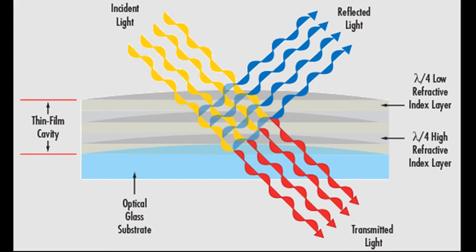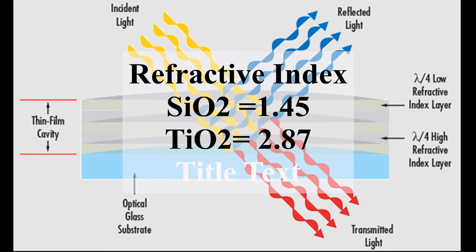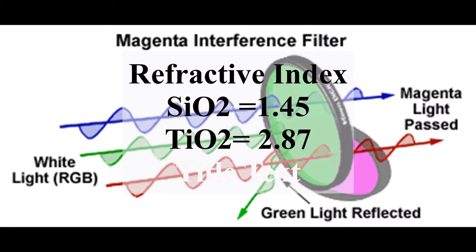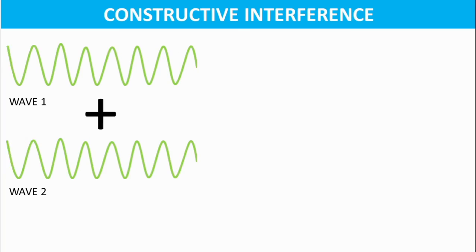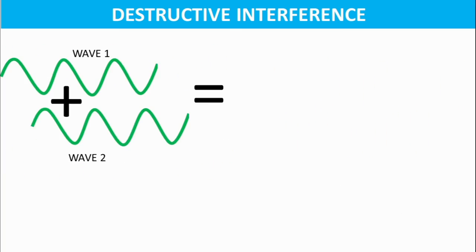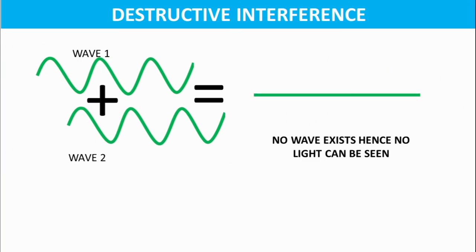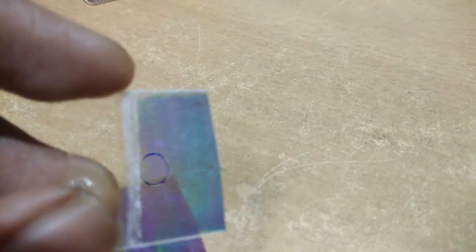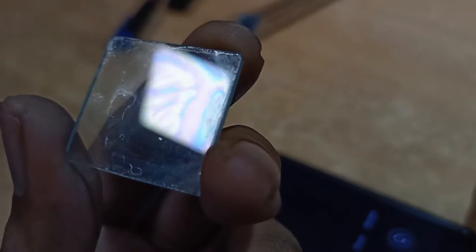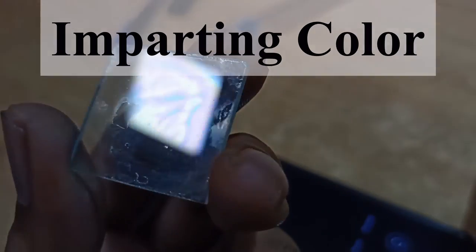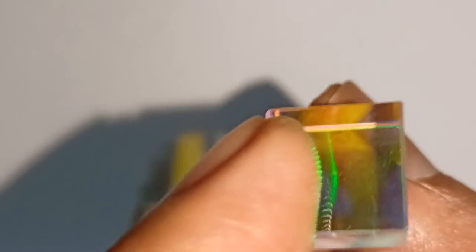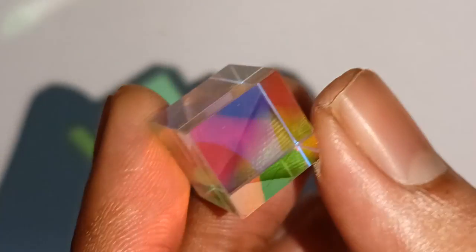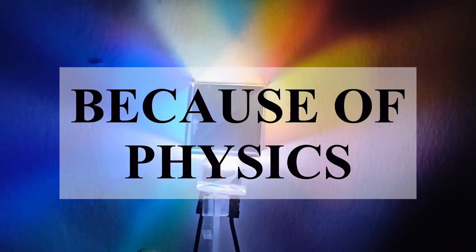Having alternating layers with different refractive indices causes the phenomenon of constructive and destructive interference. You can see particular light being reflected and the rest being transmitted, imparting color. So next time when you see a colored glass, remember the world is colorful.